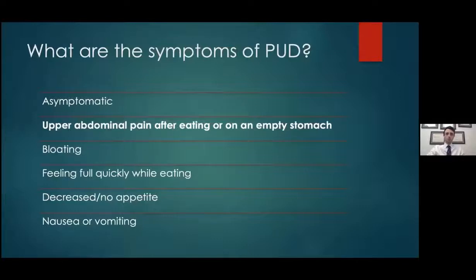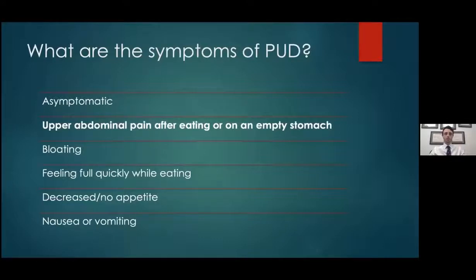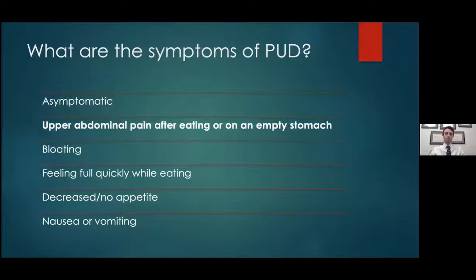In terms of symptoms, many people have ulcers and don't know it — they have no symptoms until a complication develops. The classic symptom is pain in the upper abdomen, called the epigastrium, right beneath the chest. Gastric ulcers typically cause pain after eating, while duodenal ulcers usually cause pain several hours after eating, essentially on an empty stomach. Other symptoms include bloating, nausea or vomiting, feeling full very quickly after eating, and decreased appetite.